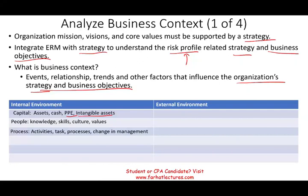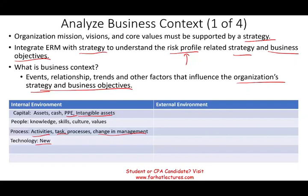Internal factors also include processes — the activities, tasks, and change management within your company. Each company will have different processes, and that will help align the company toward a particular strategy. Technology is another internal factor: what type of technology are you using — is it new, old, or average?